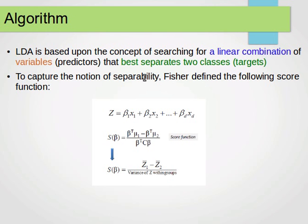To capture the notion of separability, Fischer defined the following scoring function: Z equals beta1x1 plus beta2x2 until betadxd. These x's are our variables. If our data is two-dimensional, just like the example for decision trees where we measured the heights and weights of people, these are two variables. Our data is two-dimensional. These height and weight are the x's.